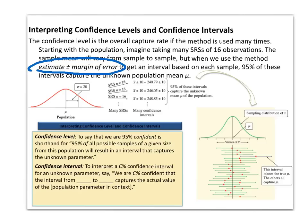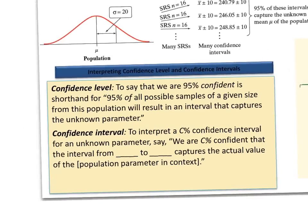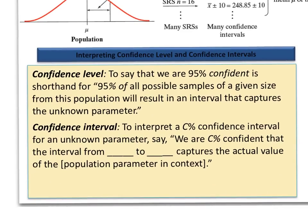And so it's really important that you understand that this is how we interpret a confidence level. A confidence level says that we are 95% confident that 95% of all possible samples of a given size will capture the true parameter, which in this case we're looking for the mean. So when we write this on the AP exam, we need to write this down.